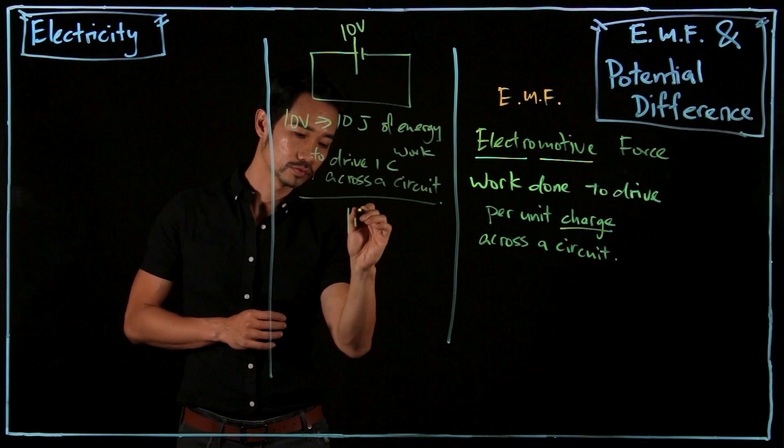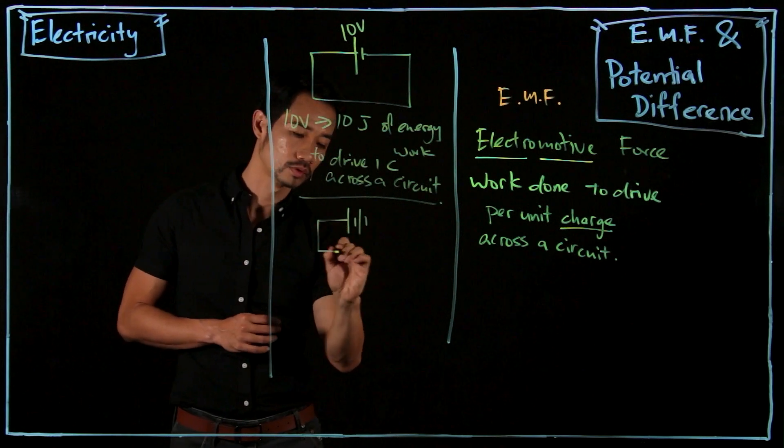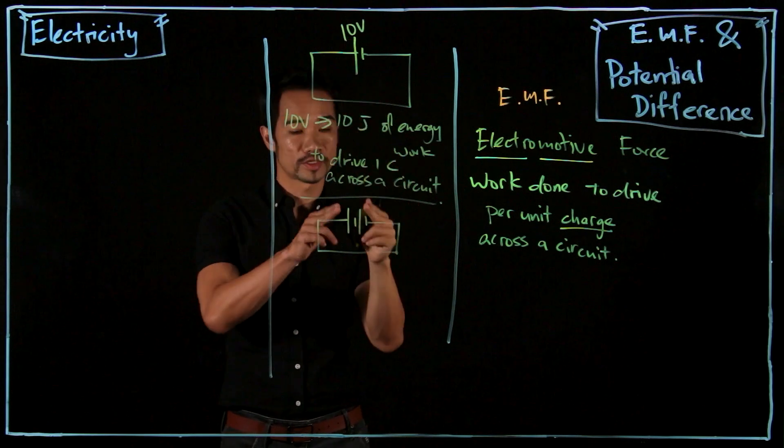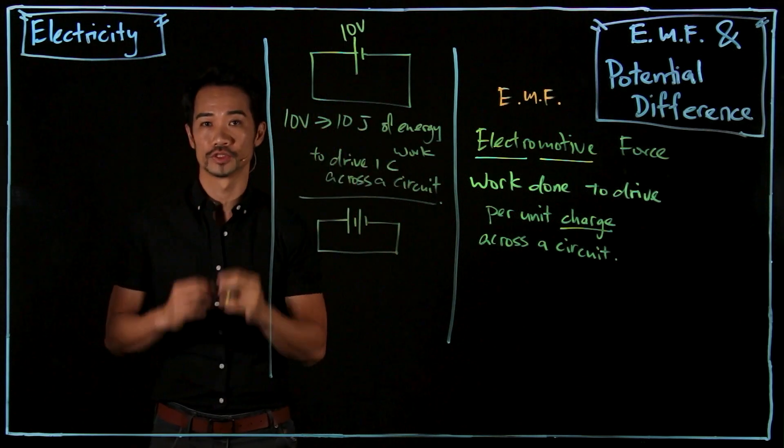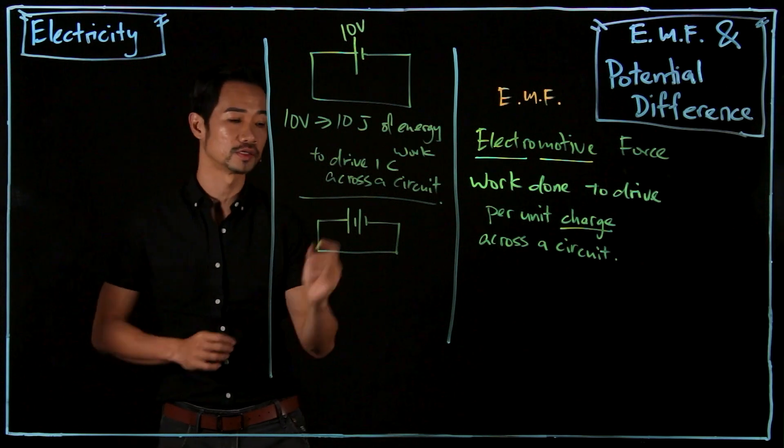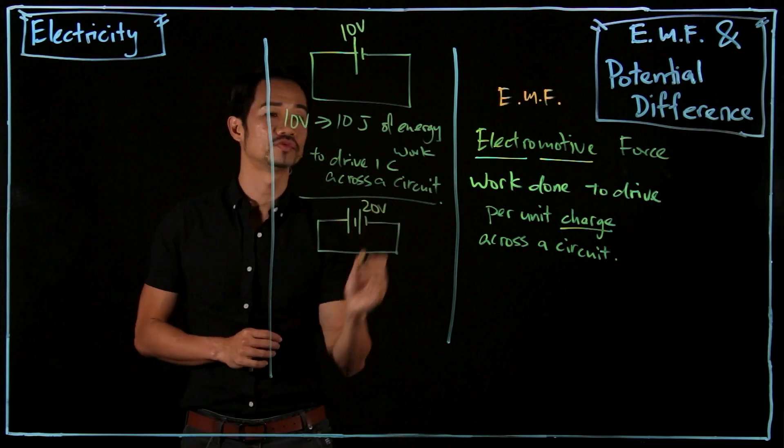If I have two dry cells, each one 10 volts, so I stack them up next to each other, which you will learn the term series later. So let's say this is 20 volts.